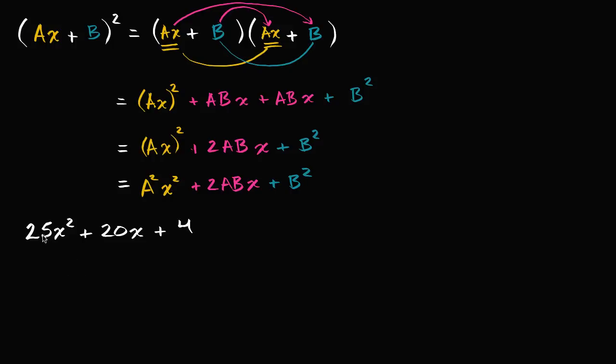Well when you look at this, you say, well look, there's 25x squared. That looks like a perfect square. 25x squared is the same thing as five squared x squared, or you could write it as 5x squared.